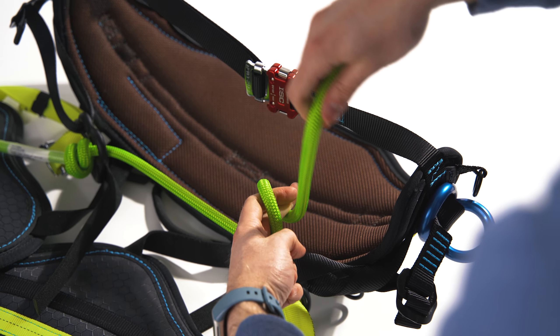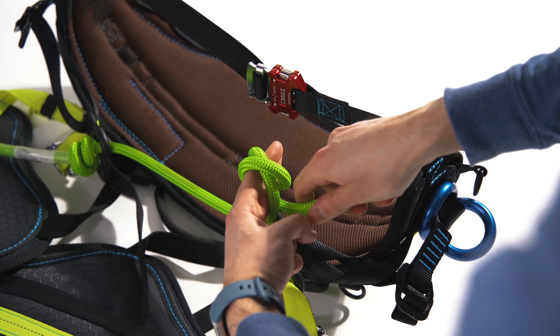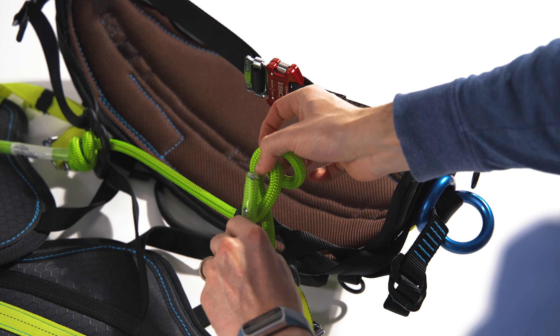Finally, tie a double overhand stopper knot on the remaining end to secure the rope bridge. Make sure the knots are equal on both sides.